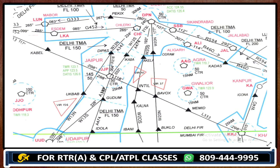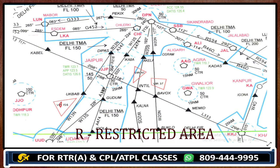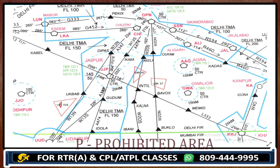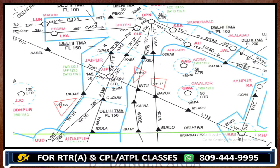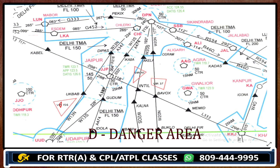If it is VIR — if it has an R — then it is a restricted area. If it is P, it means prohibited area. If it is D, it means danger area. This applies to any chart. This is how we can identify and know which area we have to avoid, or in practical situations.